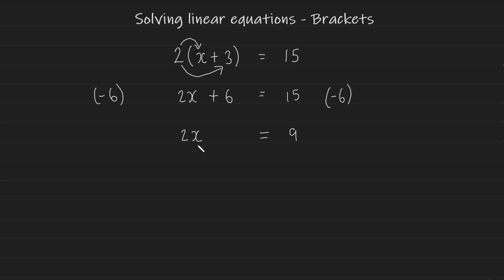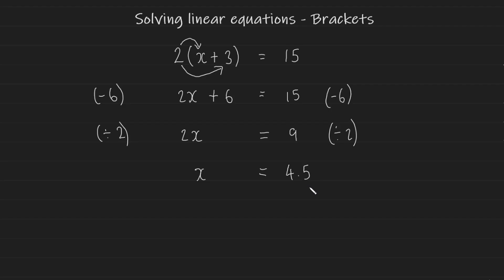We're one step closer to getting x on its own. The 2 is attached to x through multiplication, so we do the opposite operation — division by 2 — on both sides. 2 divided by 2 gives us 1, leaving just x, and on the right hand side 9 divided by 2 gives us 4.5.